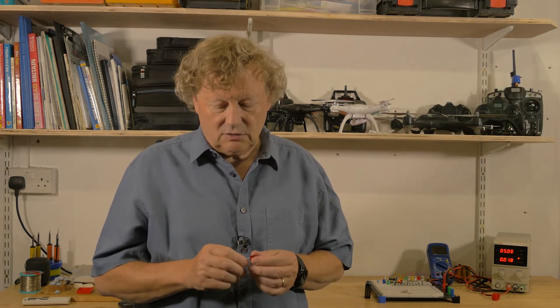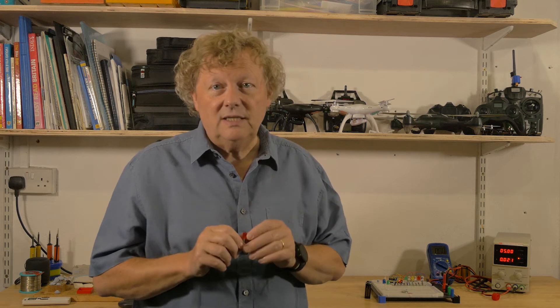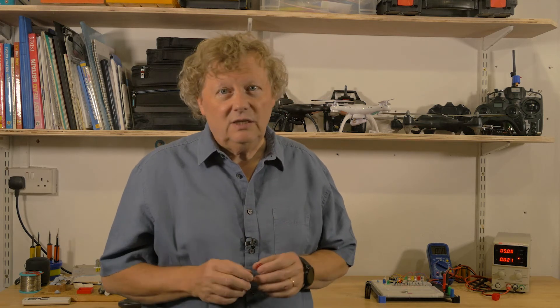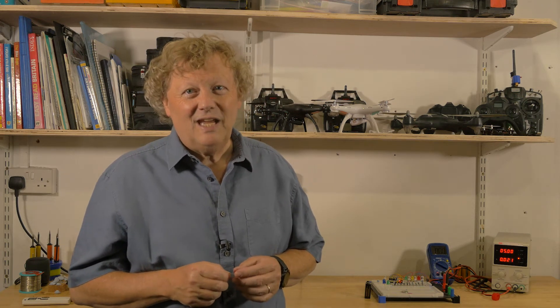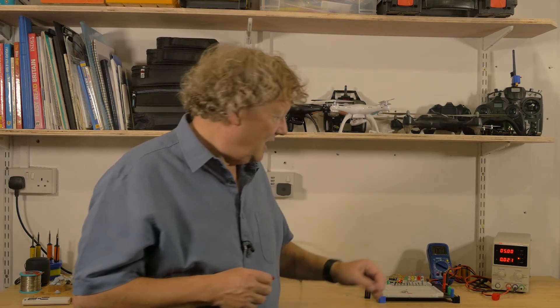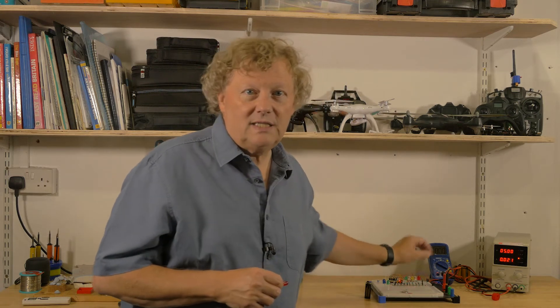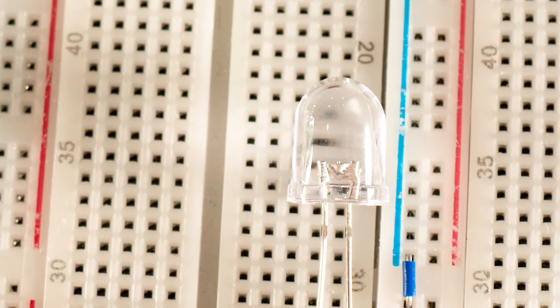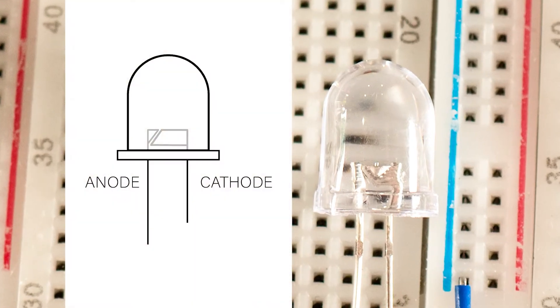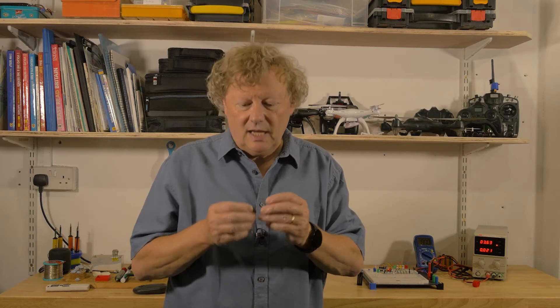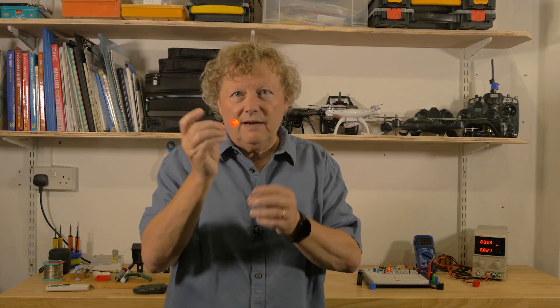Some LEDs also have a flattened area at the base of the bulb to indicate the cathode, but you can't always rely on this — I've seen some where the flat section is on the positive side. If you've already cut off the leads, look inside: the large part of the diode is the cathode and the small section is the anode. Another way of testing is simply to put a small voltage across the LED leads, maybe with a coin cell, and then you can see which polarity lights it up.